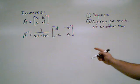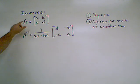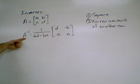So here's our formula. We start off with a matrix A. It has elements a, b, c, and d. Our inverse, which is notated by this, is A with an exponent of negative 1. That's how you notate inverses.